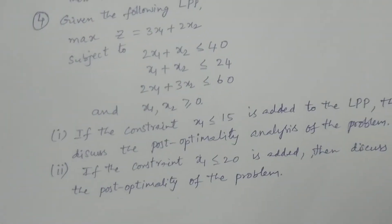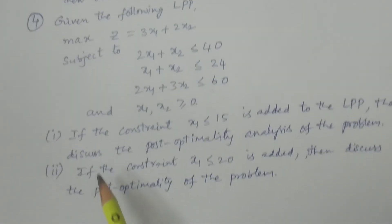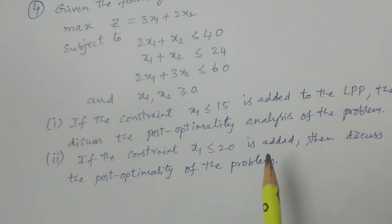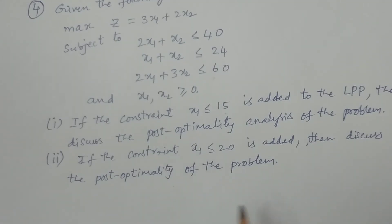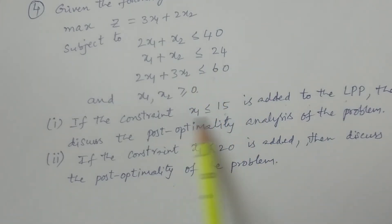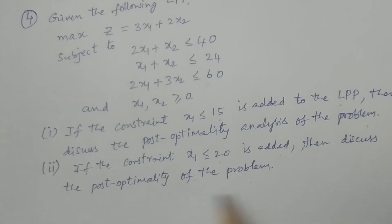Another type of problem is the addition of a constraint. Given an LPP, if a new constraint x1 ≤ 15 is added, discuss the post-optimality analysis. Similarly, if the constraint x1 ≤ 20 is added, discuss the post-optimality of the problem. The previous case covered addition of a variable; this case covers addition of a constraint.